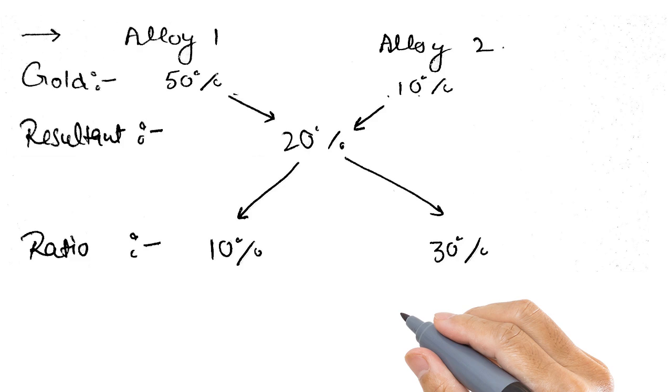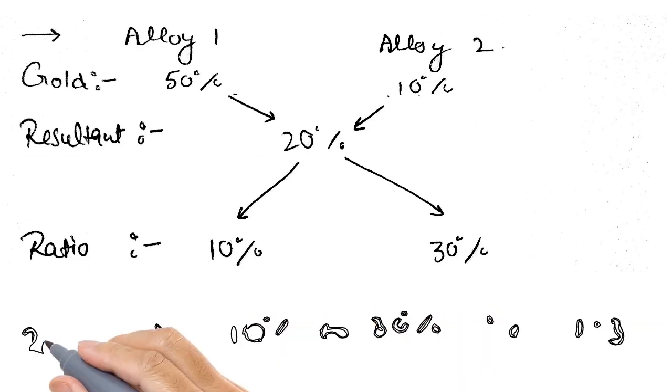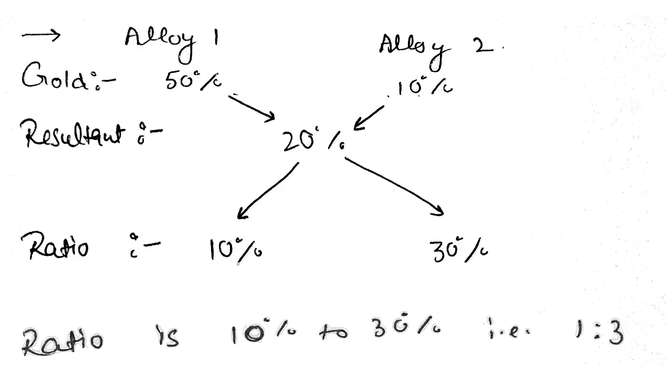The thing to notice is that we always take positive values. So the ratio would be 10 is to 30%, that is 1 is to 3. If we take one part of alloy 1 and mix it with 3 parts of alloy 2, then in the resultant we would have 20% of gold by weight.